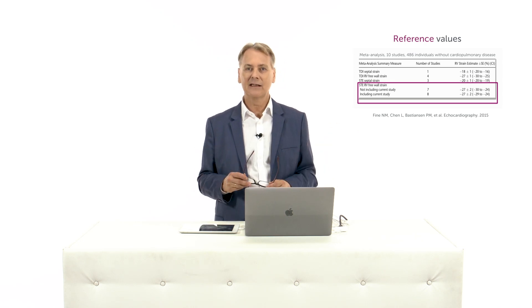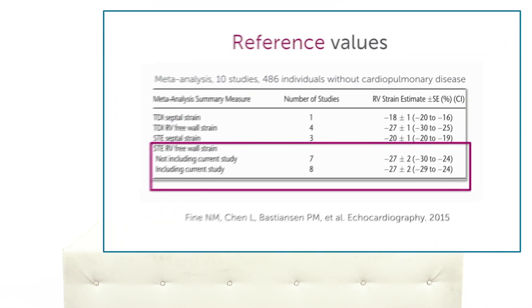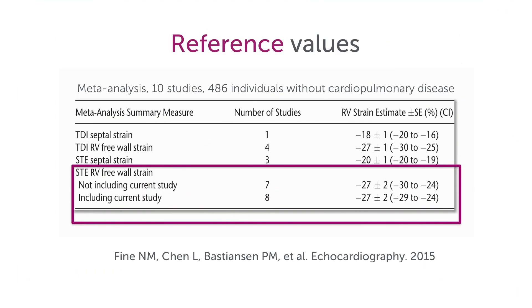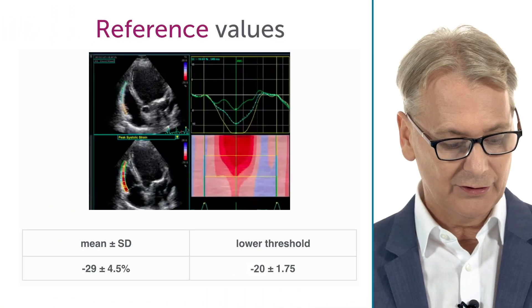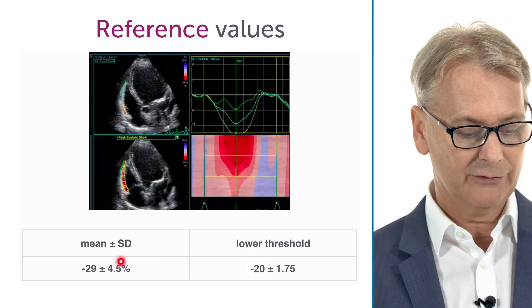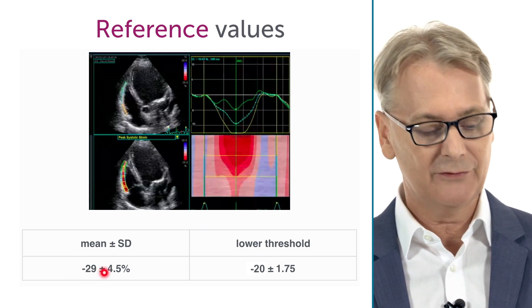There's been some discussion in the literature with different papers showing different cut-off values — some papers had values that were probably too low. But speckle tracking is now included in the guidelines as a methodology to assess right ventricle function. The mean values for normal individuals for right ventricle strain is in the range of minus 29 plus or minus 4.5 percent.